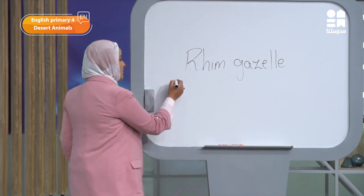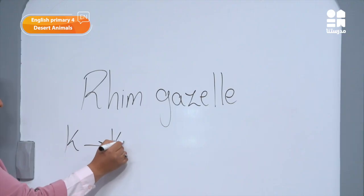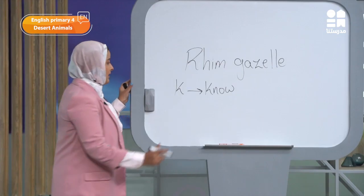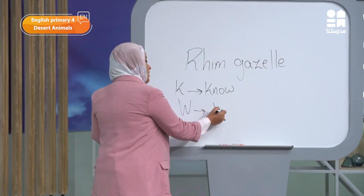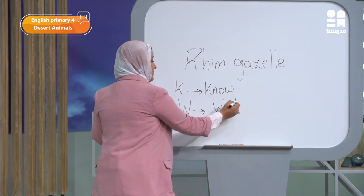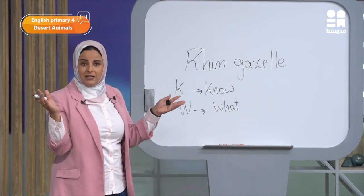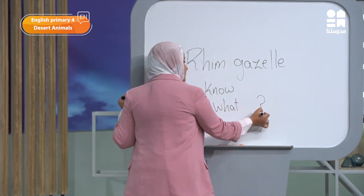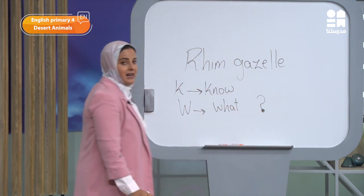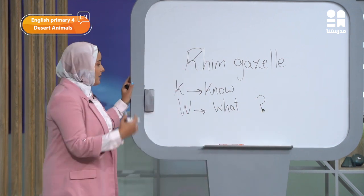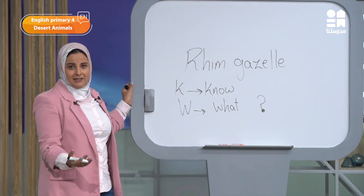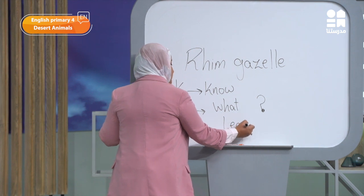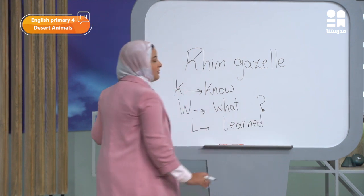What do you know about the animal? What do you want to know about the animal? I will use the KWL chart — K is what I already know, W is what I want to know, and L is what I learned about the animal.